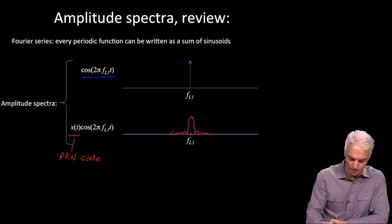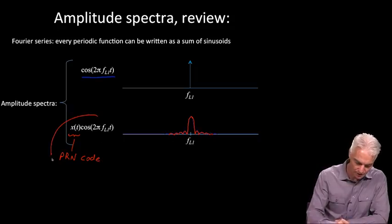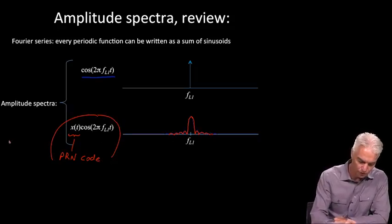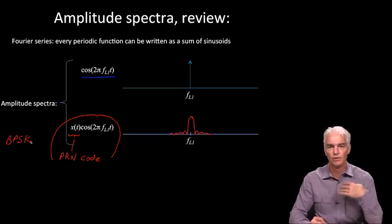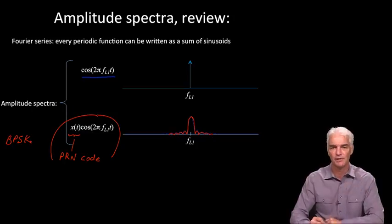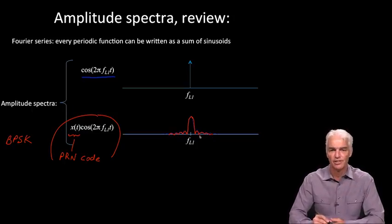You remember that all of this together formed what we call the BPSK, binary phase shift keyed signal, which was the sine wave changing phase every now and again. What it looks like in terms of the amplitude spectra is just that sinc function. When you see that, you know that's something like the GPS CA code.